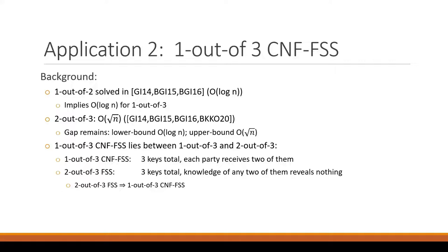And so one out of three CNF FSS can sort of be thought as lying somewhere between pure one out of three FSS and two out of three FSS. And certainly two out of three, if you have a two out of three FSS scheme, you can trivially construct a one out of three CNF FSS scheme simply by dealing an extra key to each party. And I'll observe that in some settings where two out of three FSS might naturally be used, you can actually use one out of three CNF FSS instead. And this works in settings where each party needs to perform the role of not only its own computation, but one other party's computation. And this naturally occurs in various settings, including DO-RAM.